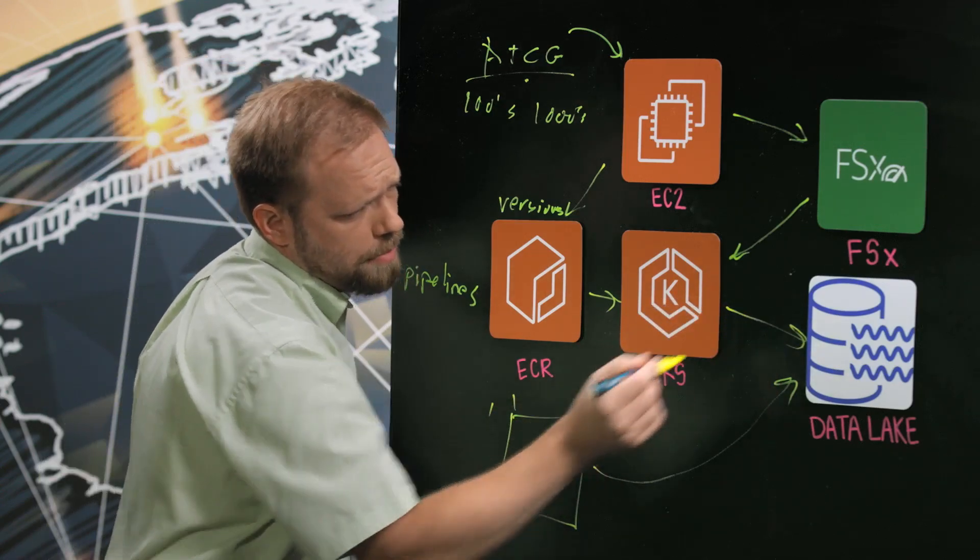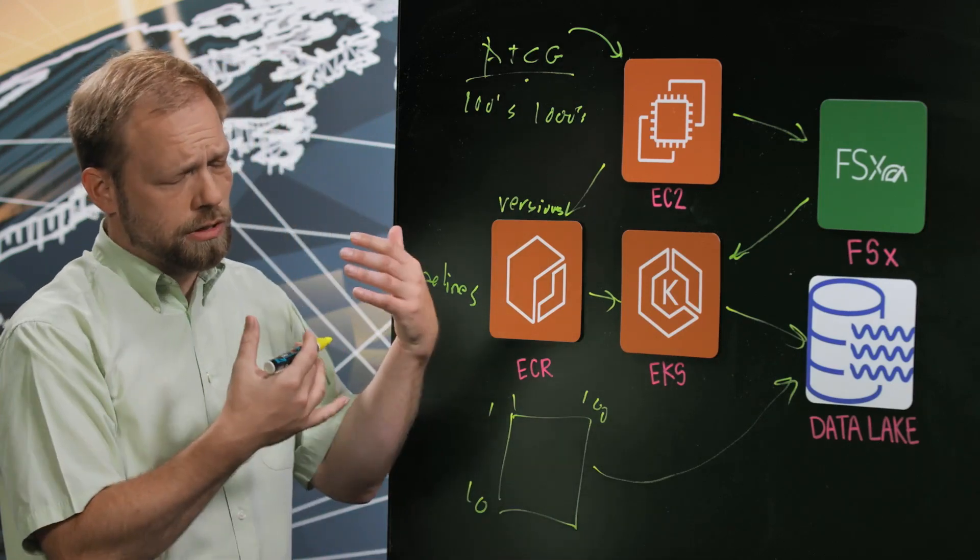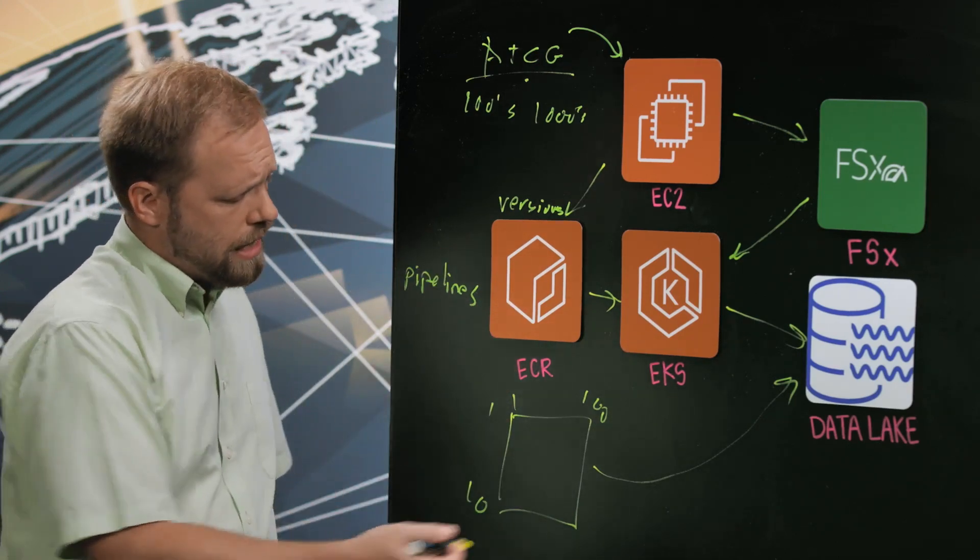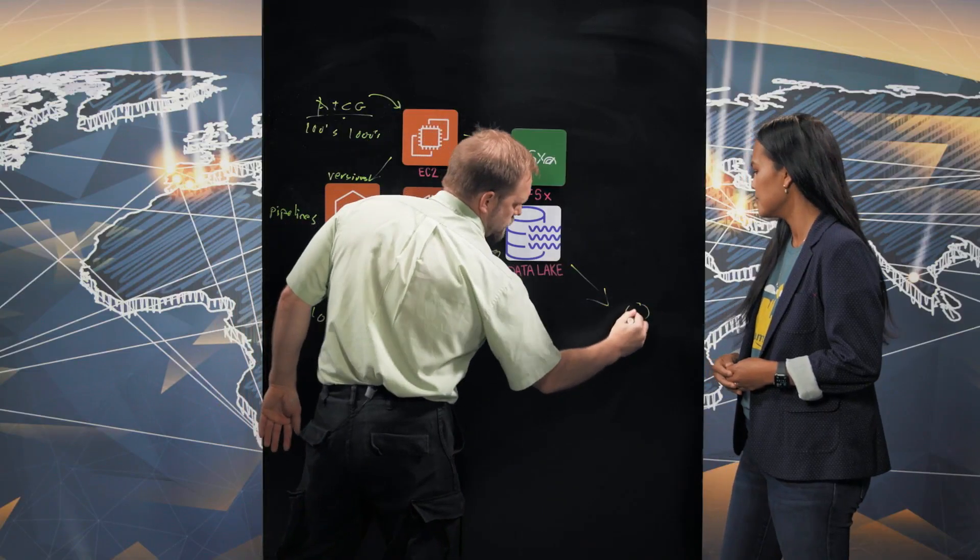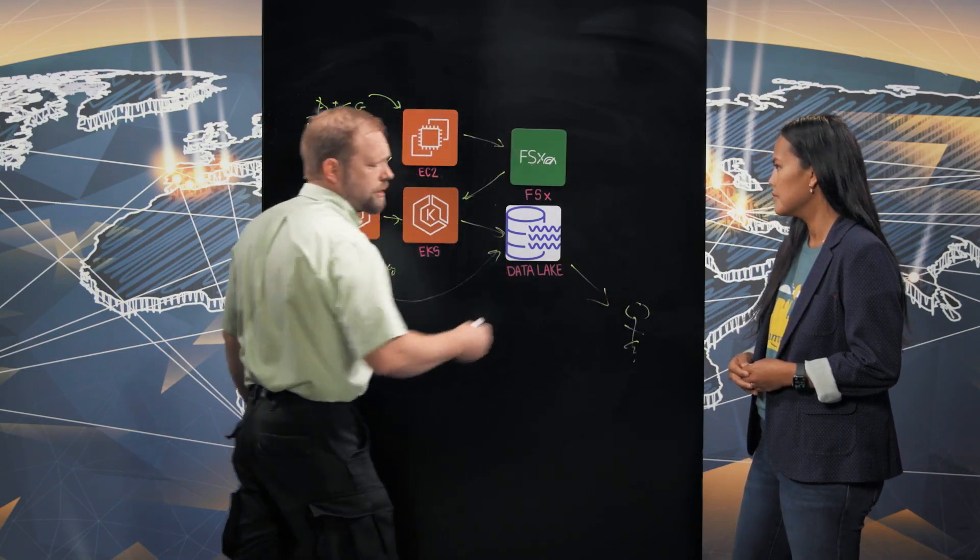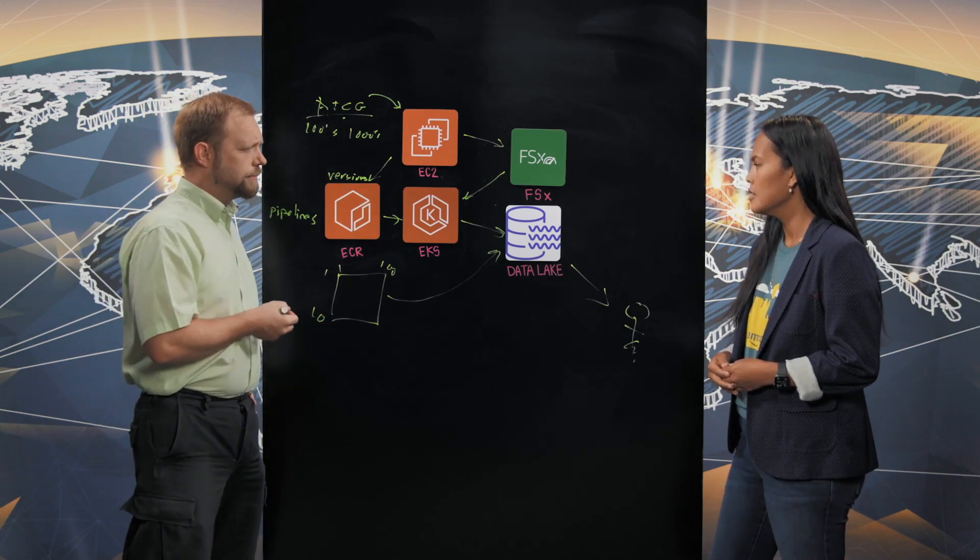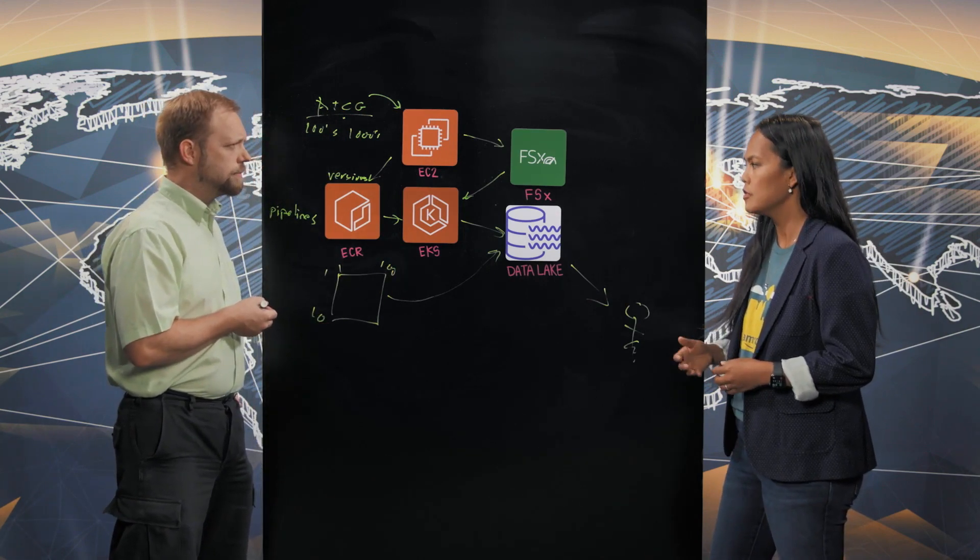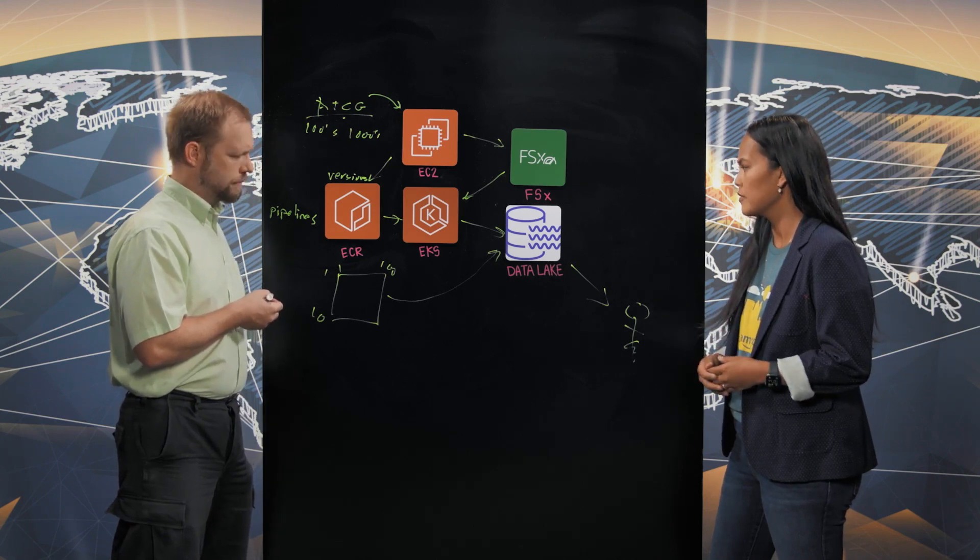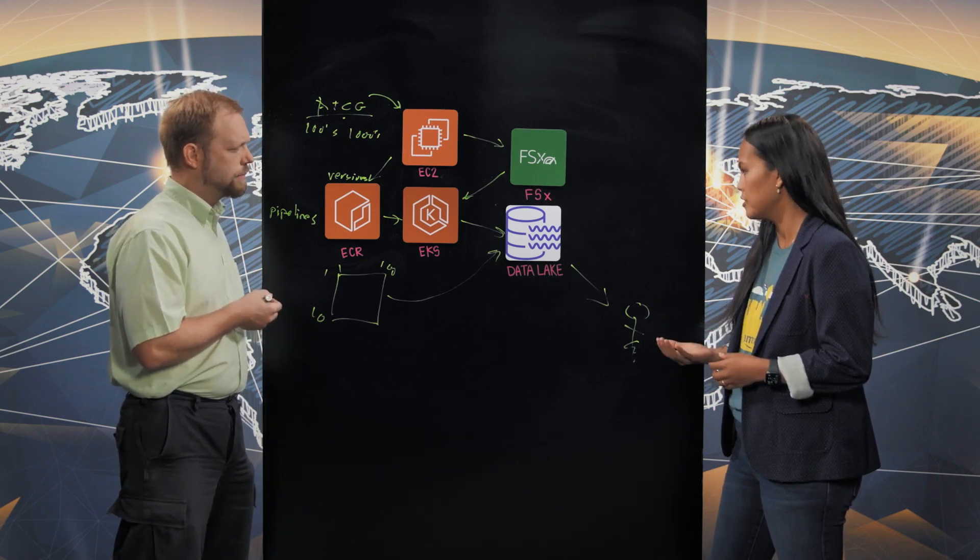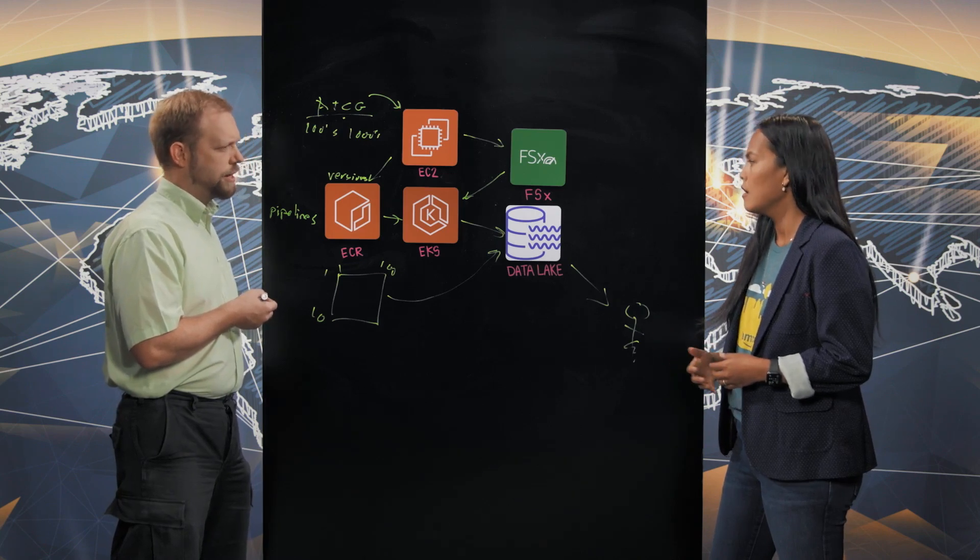And then the outputs of that being written to the data lake, of course, we're saving them. We're persisting them and these matrices for the downstream users. And that's specifically the data scientists who are doing the statistical analysis and eventually the biologists. Okay. So you're able to take the version from ECR, train on a particular model to do that rapid discovery and populate your data lakes for your data scientists to consume from. Exactly. Awesome.